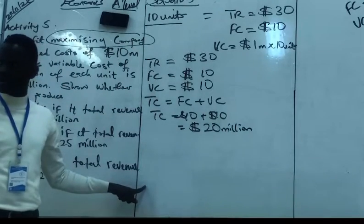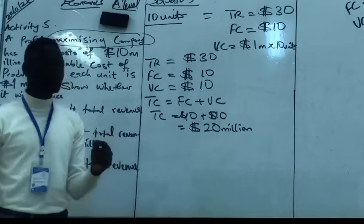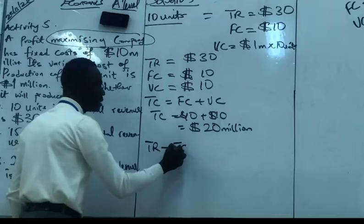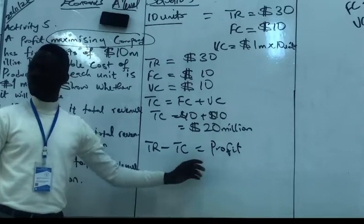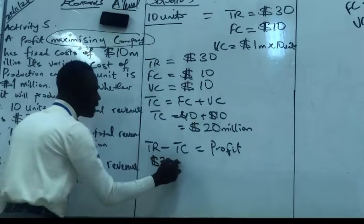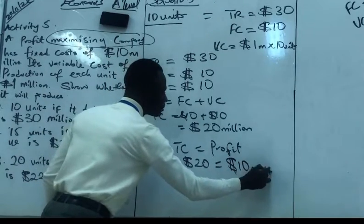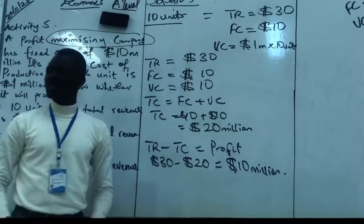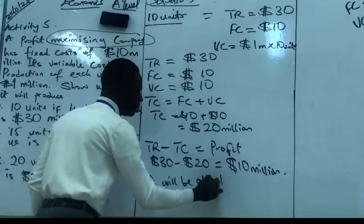It's a profit maximizing company, right? So how do we know if we have profit or not? We have to check if this company will be able to produce at these units. The total revenue minus your total cost gives us profit. What's our total revenue? 30 million. 30 million? 20 million. 20 million. So we have profit of 10 million. So at 10 units of output, this company will be able to produce. Do you understand? So we have to say it will be able to produce.